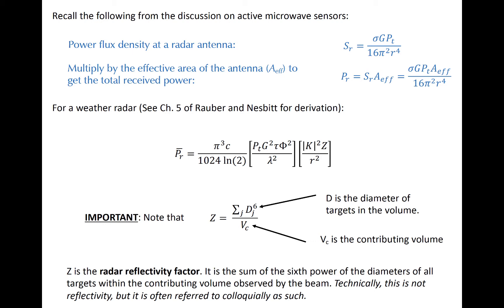This equation describes the power returned to an antenna by a set of targets distributed throughout a contributing volume, and can be derived by starting with the equation shown in blue at the top, which we first encountered when discussing scatterometers. Note that the contributing volume, this V sub C, is that contained within a single gate.